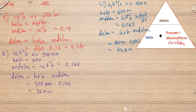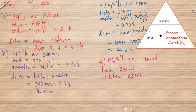Then let's take the last one, D. So it's 82.5% of 200 centiliters. So we have hela is 200 centiliters. Andelen is 82.5%, which corresponds to 0.825.